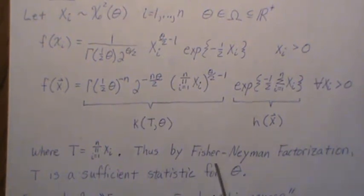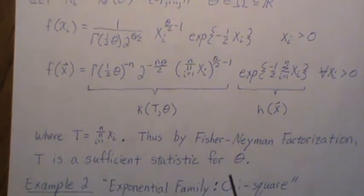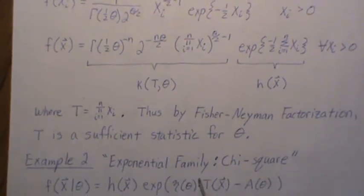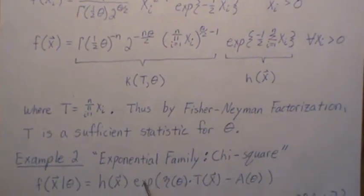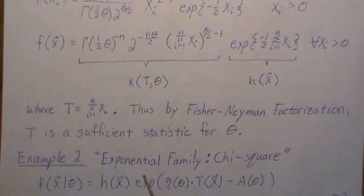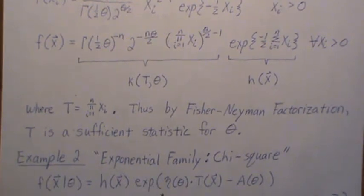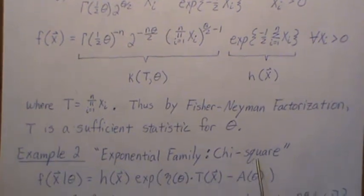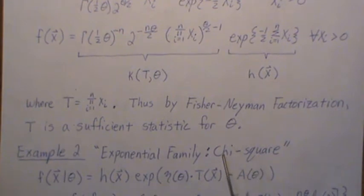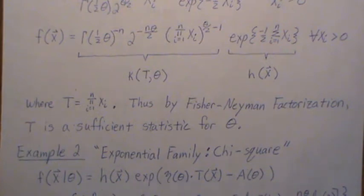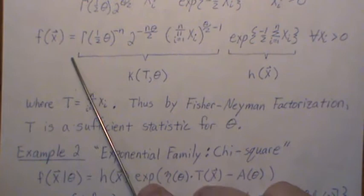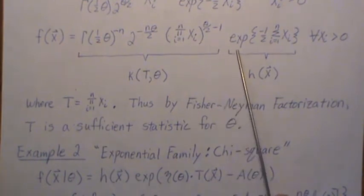Example two is a follow-up from a video called Exponential Family Chi-Square, where we write the chi-square distribution in what's called the exponential family, if it can be written in a specific form. What we're going to do is take this joint density and write it in that form.